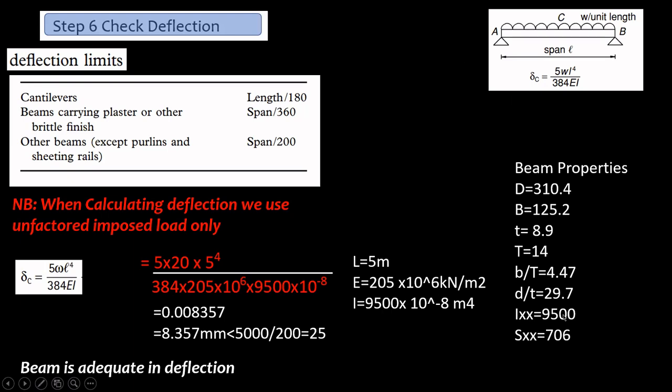Last but not least we check the deflection. So these are the deflection limits for cantilever beams. The deflection limit is length/180 for beams carrying plaster or other brittle finish, that is span/360. Other beams except purlins and sheeting rails is span/200. For this question we are not given the deflection limit, I've chosen span/200 as my deflection limit.